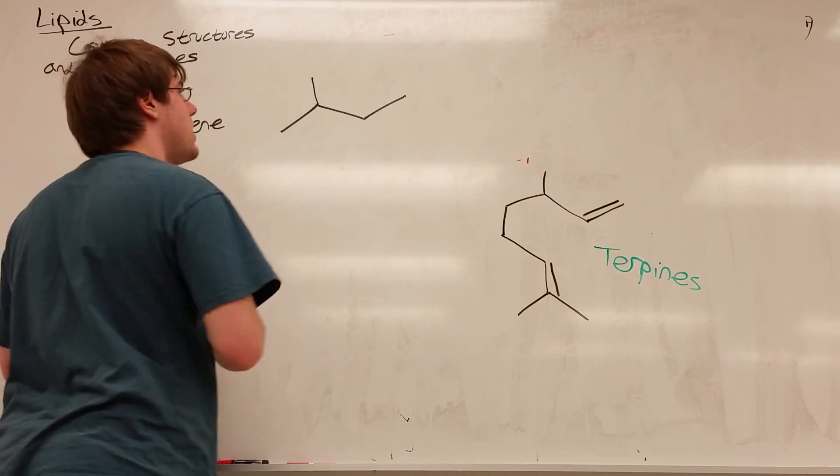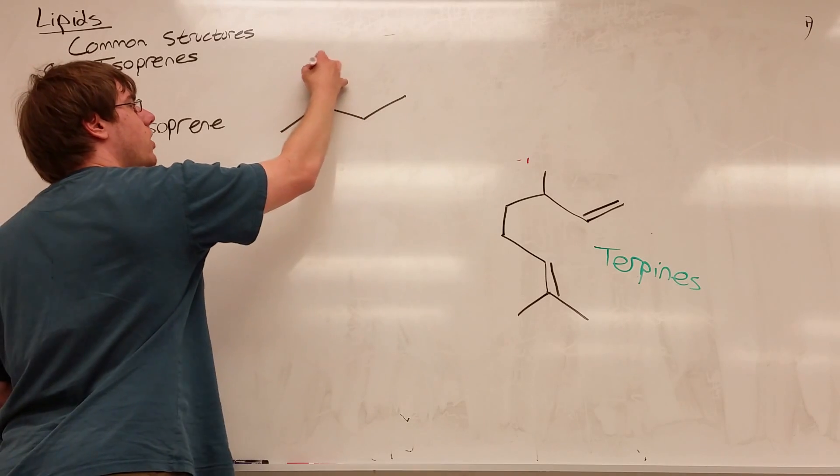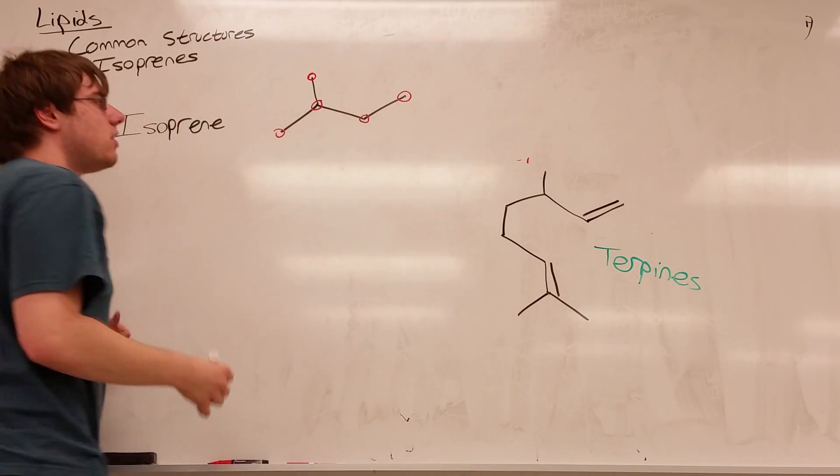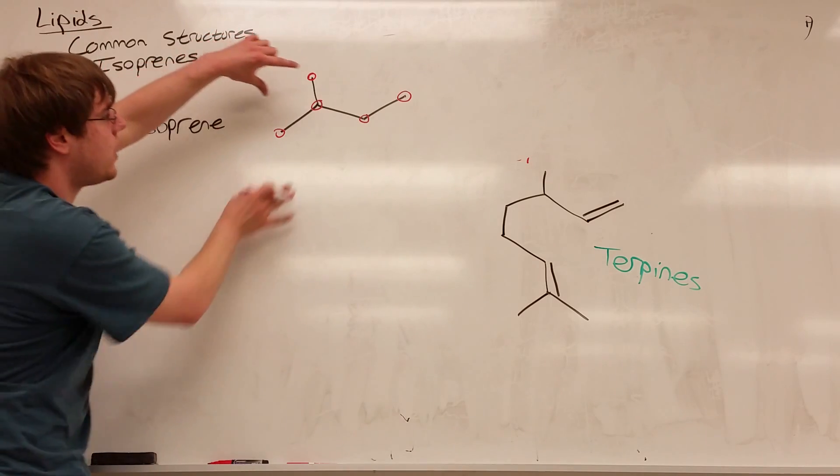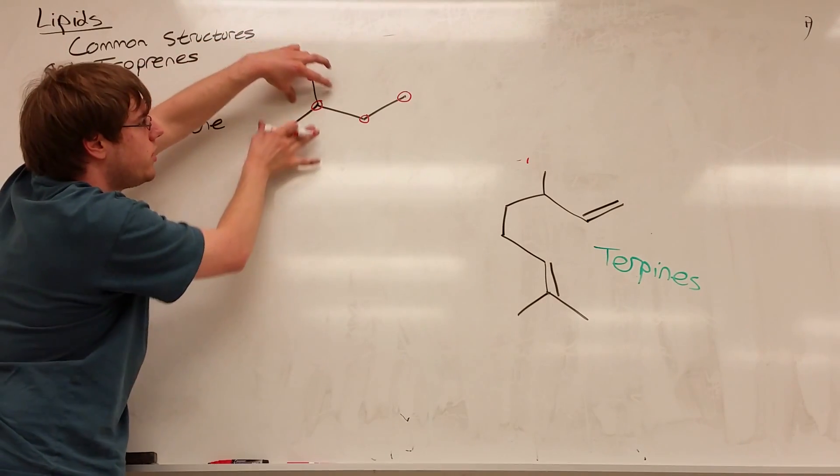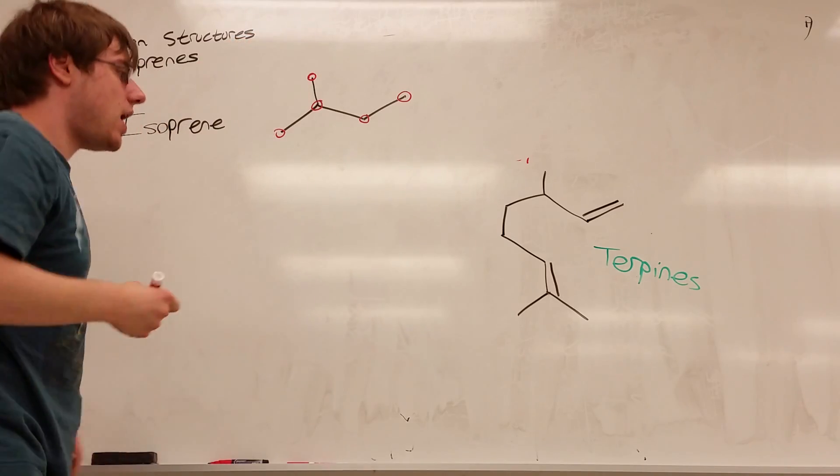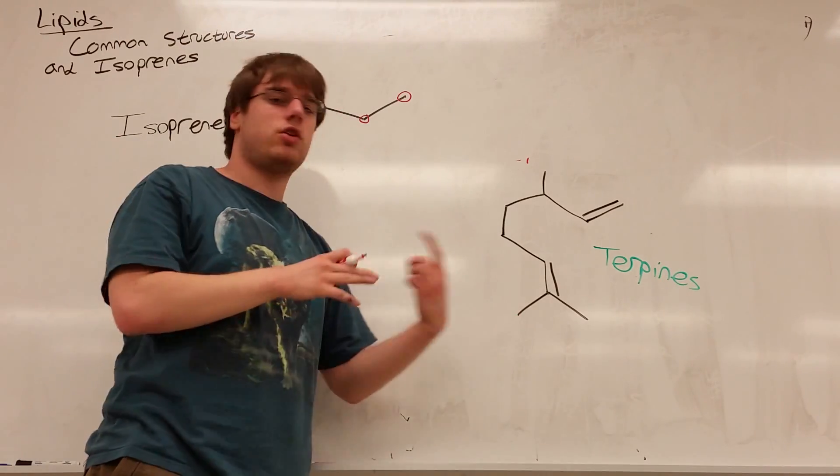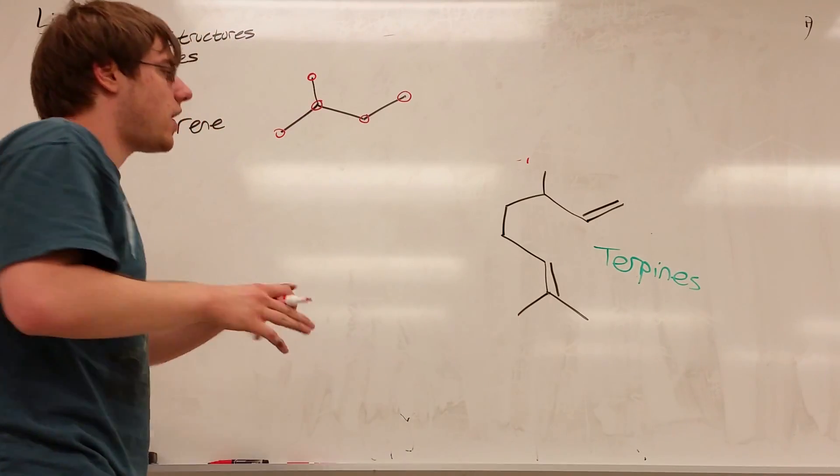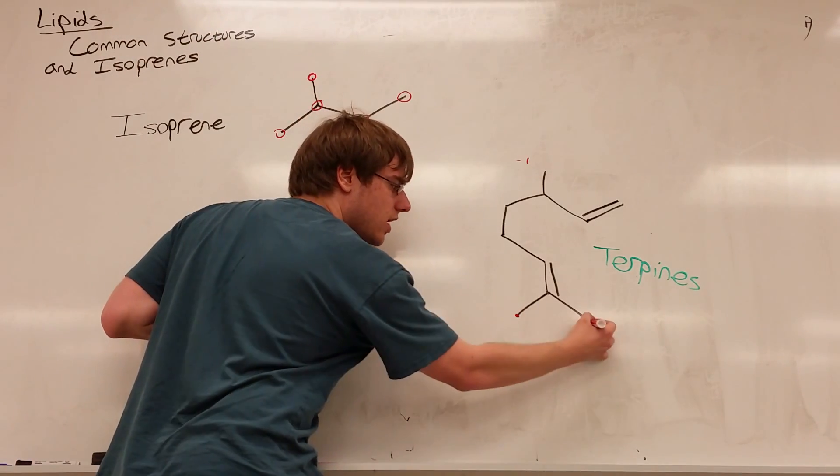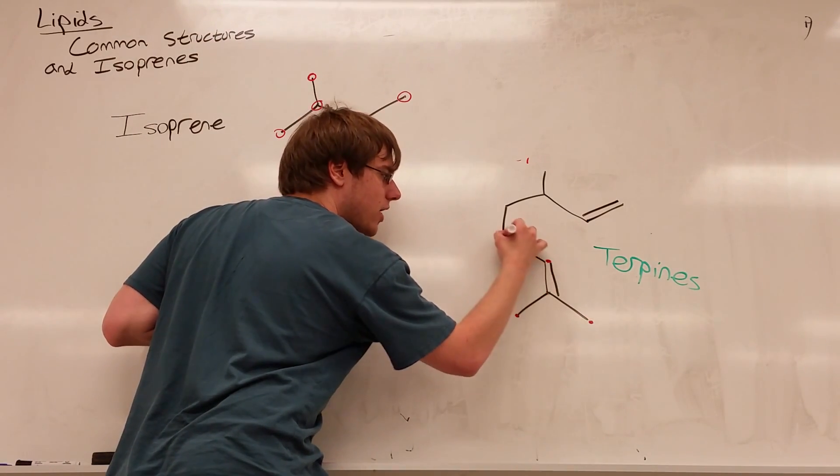What the isoprene rule states is that your structure is made up of nothing but building blocks that have this general shape: a shape that has five carbons in total—one, two, three, four, and five. And the way they're connected is you have bunny ears: three carbons that are part of bunny ears and then an ethyl tail. If we go to this structure, the way you figure out if a structure follows the isoprene rule is start by dotting every carbon you're looking at so you can keep track of where they are.